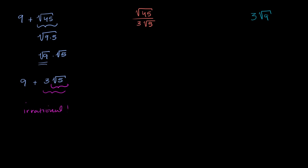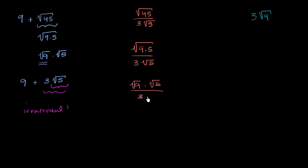Now let's think about this next expression. The numerator can be rewritten as the square root of 9 times 5 over 3 times the square root of 5. That's the same thing as the square root of 9 times the square root of 5 over 3 times the square root of 5. The square root of 5 cancels, leaving the square root of 9 over 3, which is just 1. And 1 is clearly a rational number — you could write it as 1 over 1, 2 over 2, or any integer over itself. So this is rational.